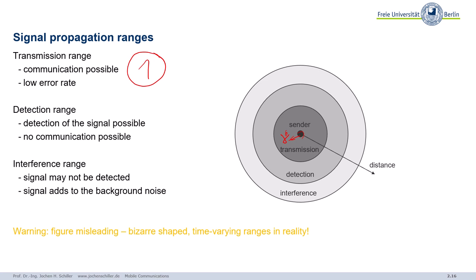If you are a bit further away, there's a so-called detection range. That means at least you will see, aha, there's something going on, but the signal is too weak to communicate. But you still see there is some wireless transmission. This will be important later on when we discuss medium access mechanisms. Then we need this detection range, that at least we hear, I don't understand what's going on, but at least there is something going on.